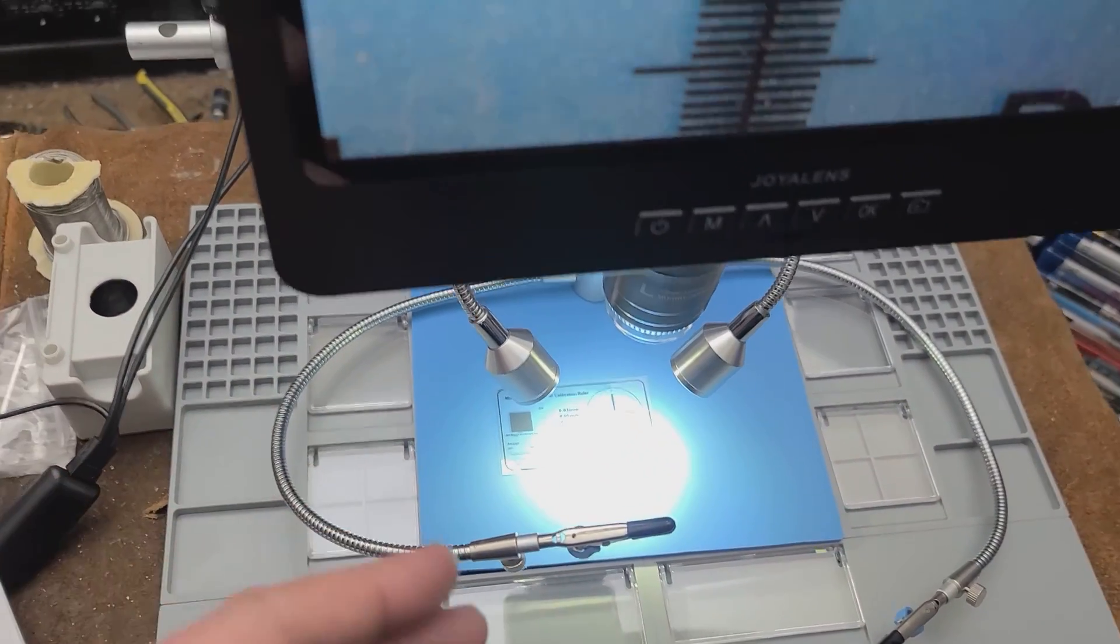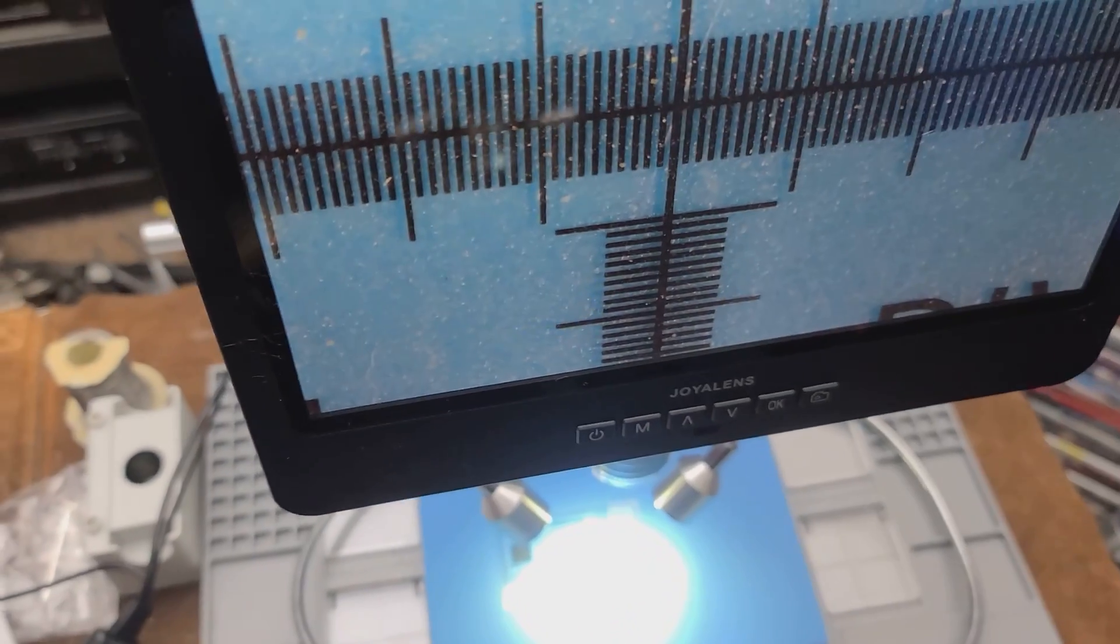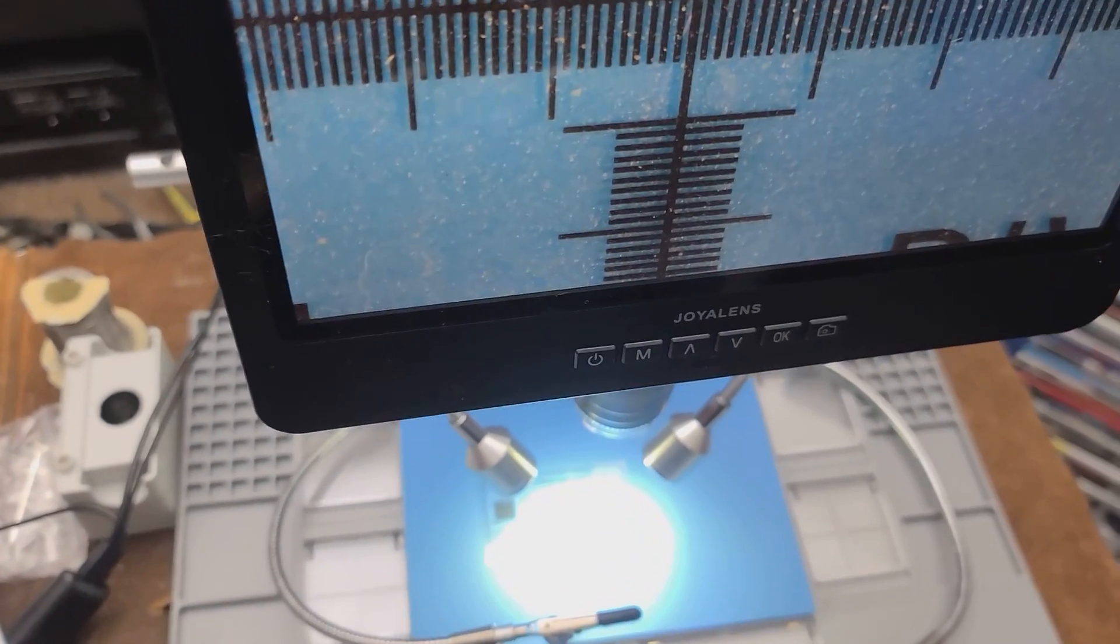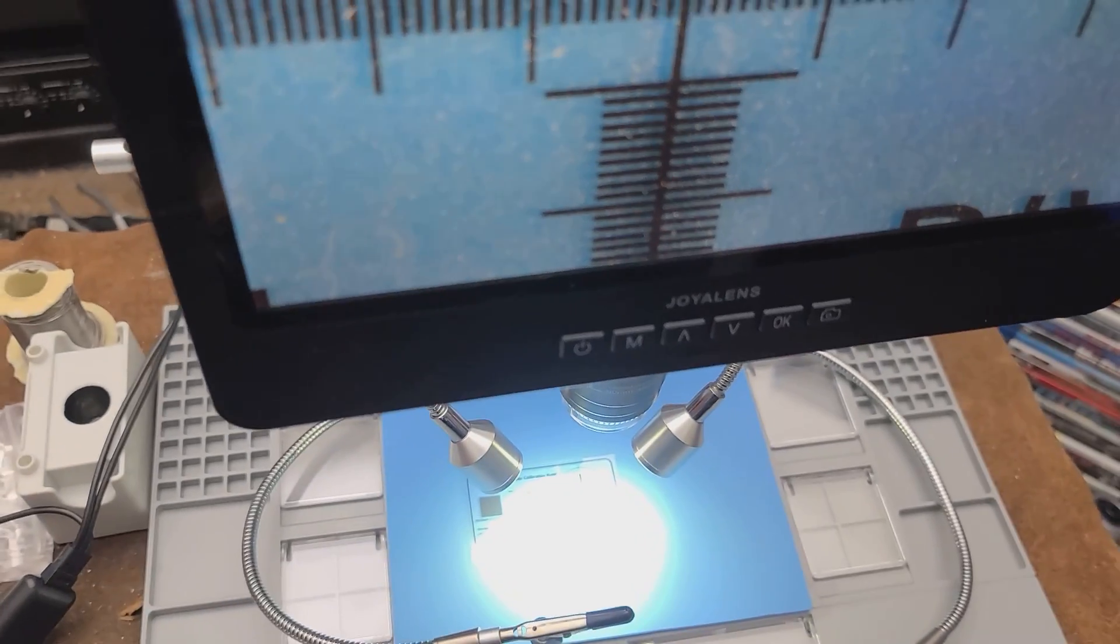Anyway, this thing's 200 bucks. The Vever was 150. So for dollar for dollar, you're getting quite a bit of value out of this. There's like a whole explosion of these electronic microscopes.